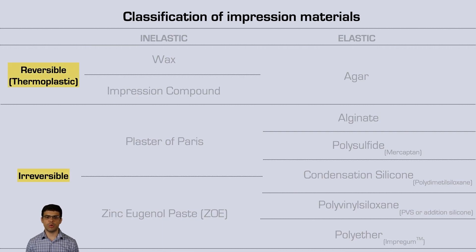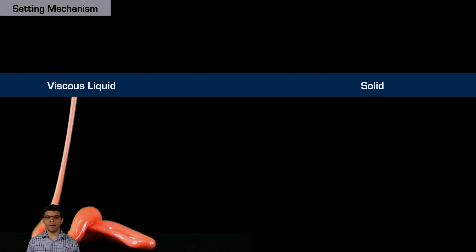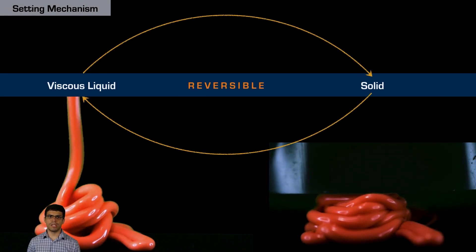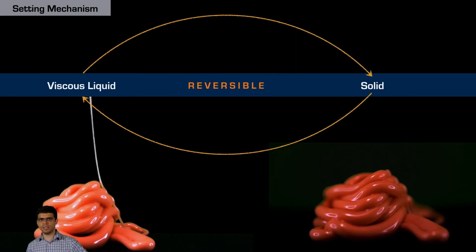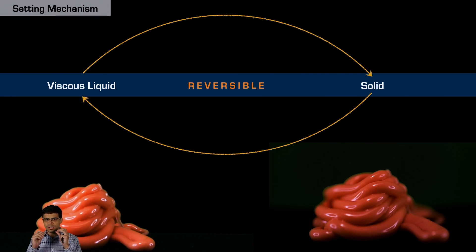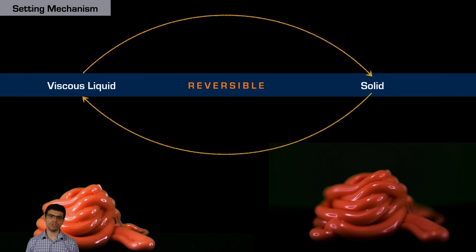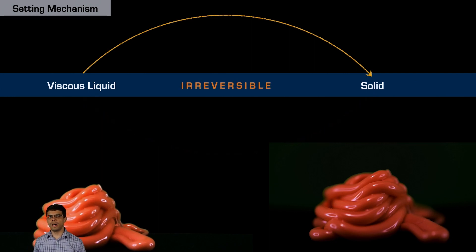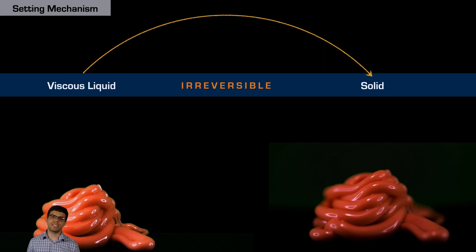Let's understand the concepts of reversible and irreversible. A reversible material can go from the viscous liquid to the solid state and back and forth. For example, wax was used for a long period — you can warm it, adjust it to the teeth, and make an impression. But this is not reliable enough; reversible materials tend to not be very stable. Irreversible materials are those where once the setting reaction happens, the material cannot return to its original state. Good examples are alginate and PVS.